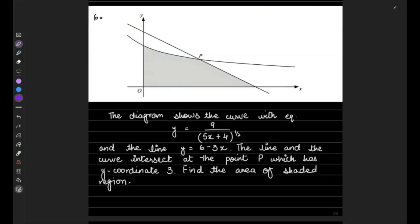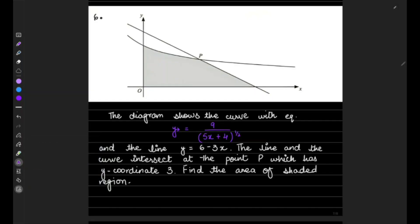Question number six: the diagram shows the curve with equation y = 9 over (5x + 4)^(1/2) and the line y = 6 − 3x. The line and the curve intersect at point P, which has a y-coordinate of 3. We need to find the area of the shaded region. This point has a y-coordinate of 3, so let's represent it on the graph. The curve has equation y = 9 over (5x + 4)^(1/2).